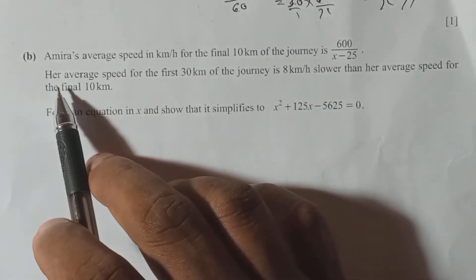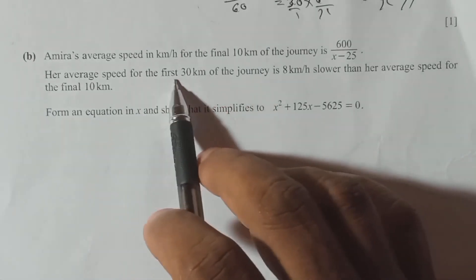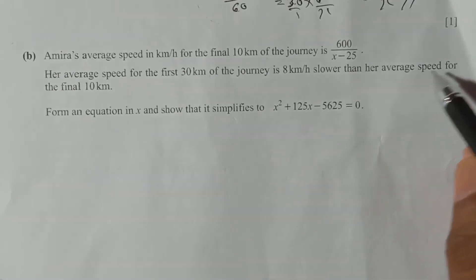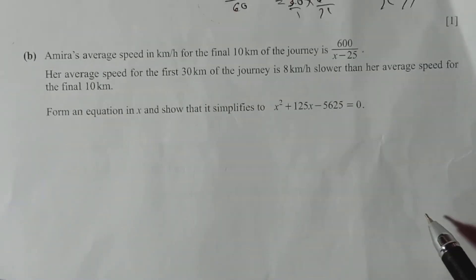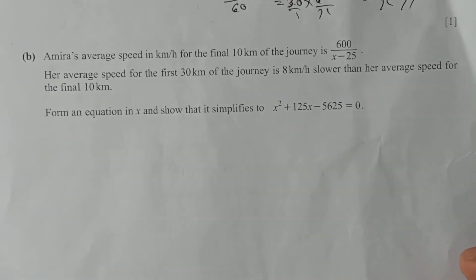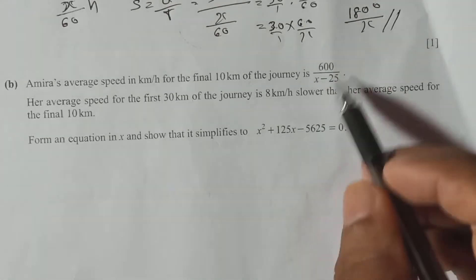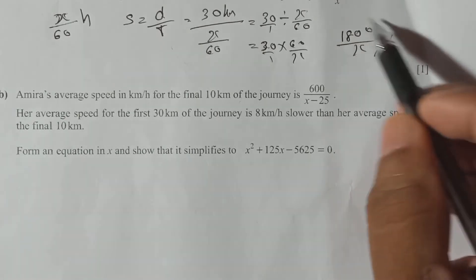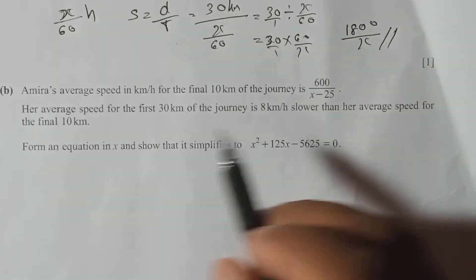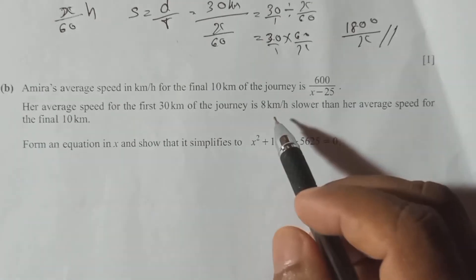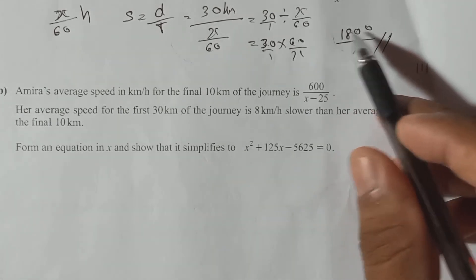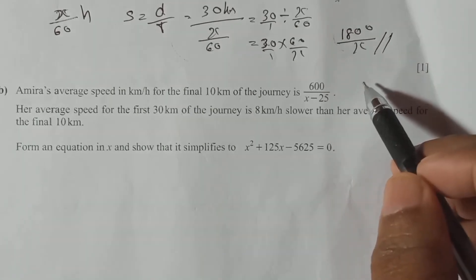This is very important: the average speed for the first 30 km of the journey is 8 km per hour slower than the average speed for the final 10 km. That means the first 30 km speed is less than the last 10 km speed. The last 10 km speed is 600/(X-25) and the first 30 km speed is 1800/X. The first 30 km is 8 km/h less than the last 10 km.